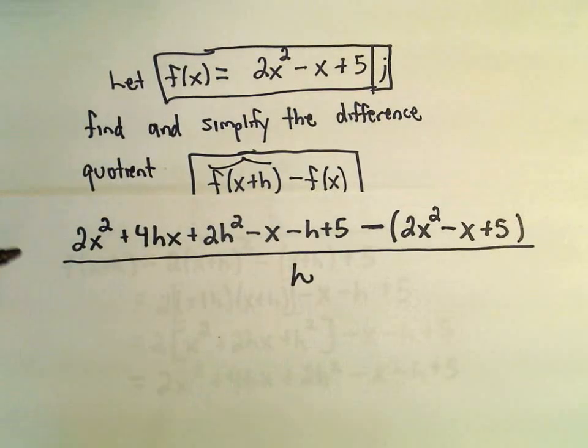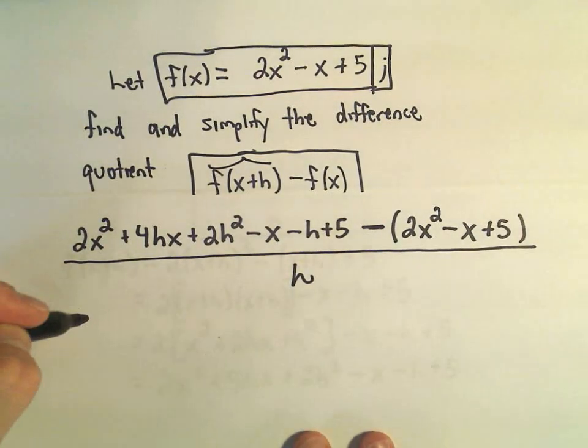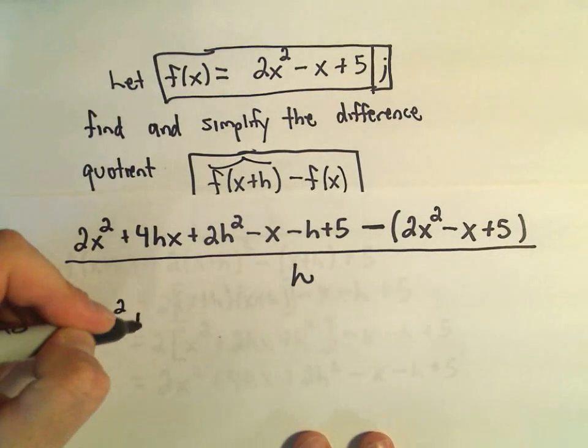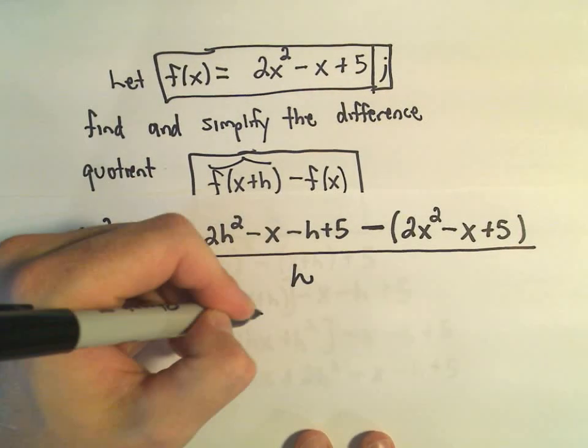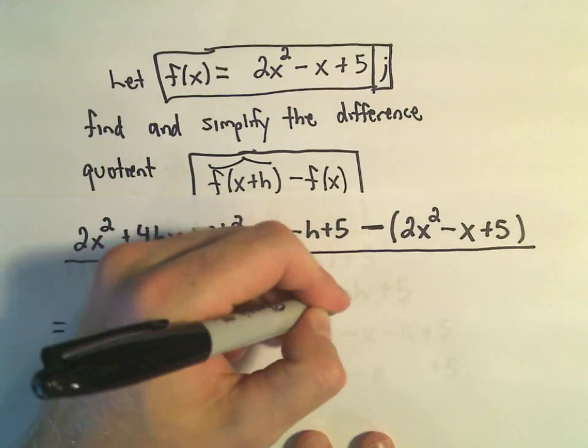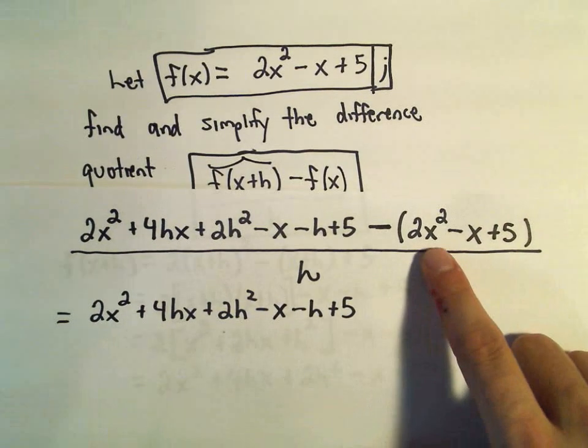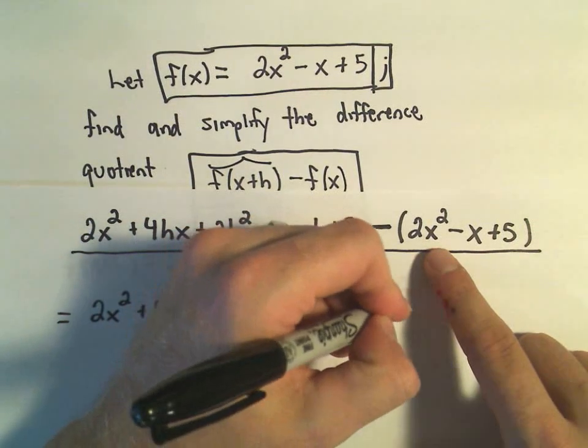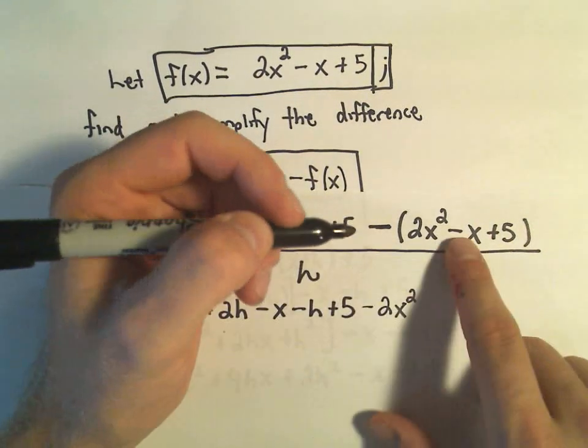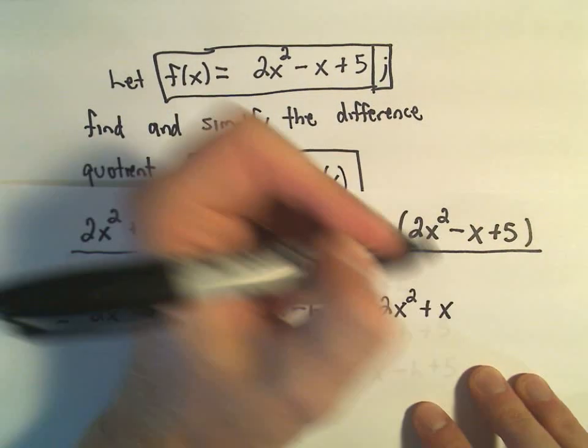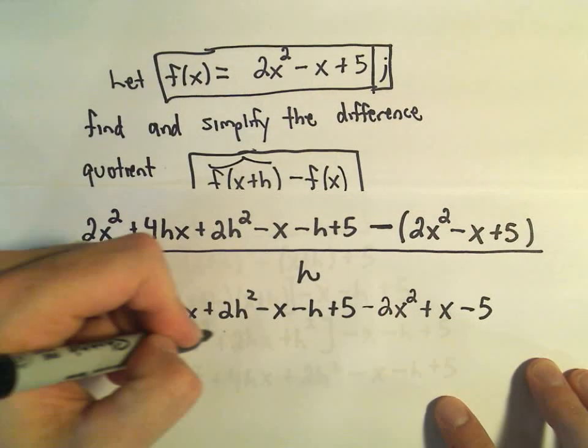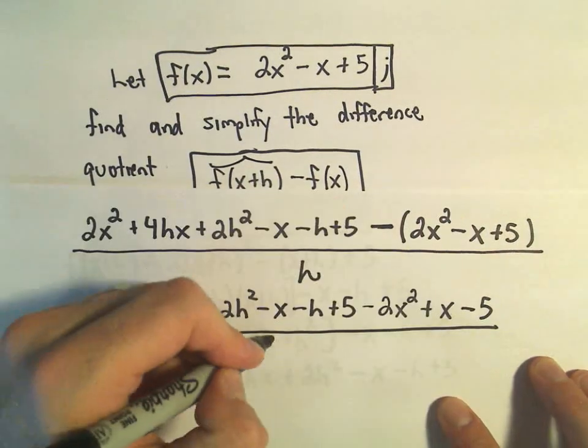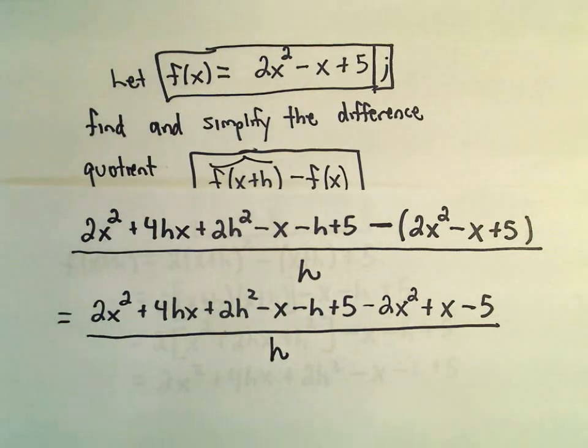Okay, well, let's see what happens here. So we've got 2x squared plus 4hx plus 2h squared minus x minus h plus 5. So I'm just rewriting everything. If we distribute the negative, we'll get negative 2x squared. Two negatives will make a positive x. And then we'll get a negative 5 all over h. And now I'm going to try to collect my like terms here.